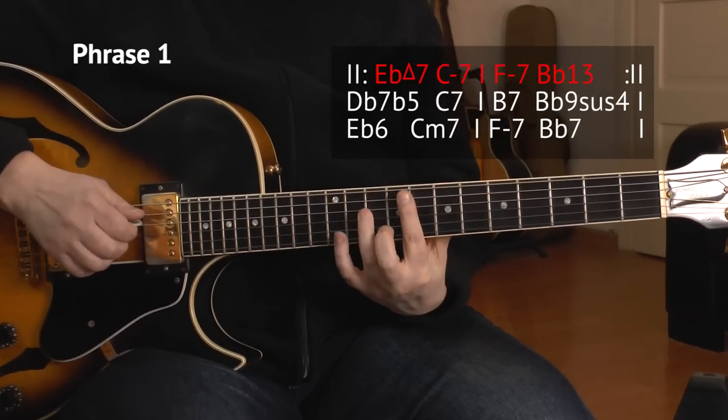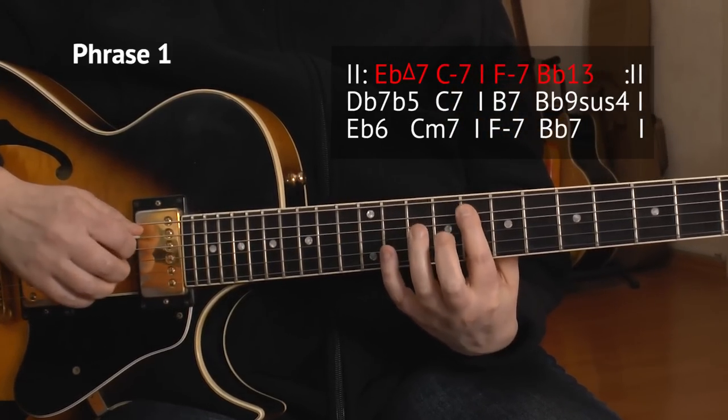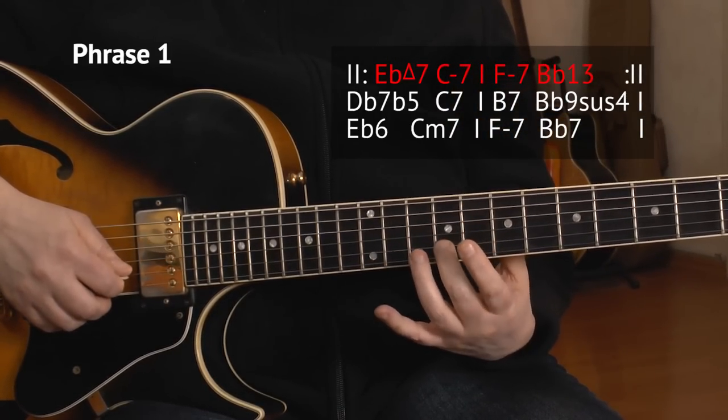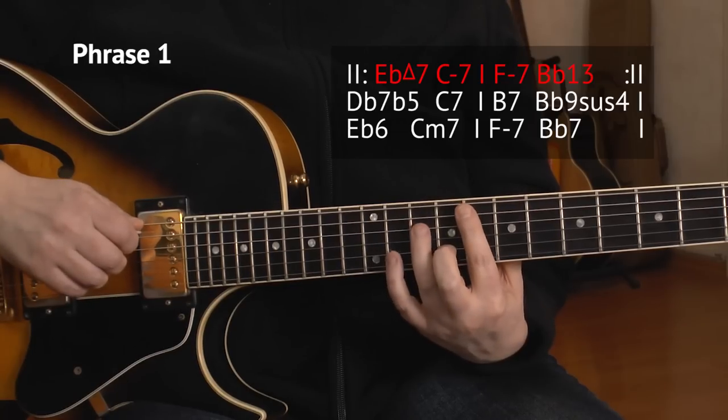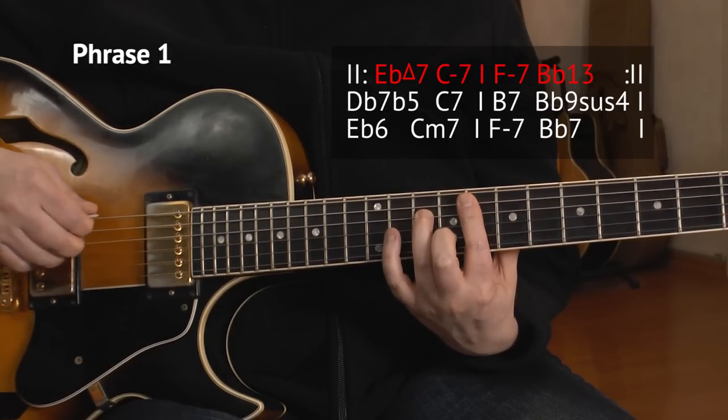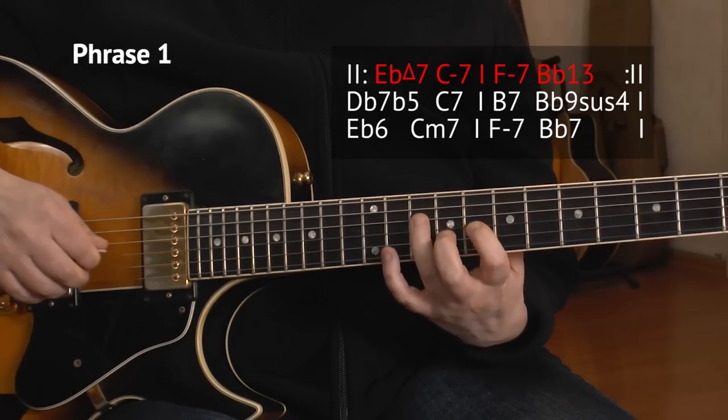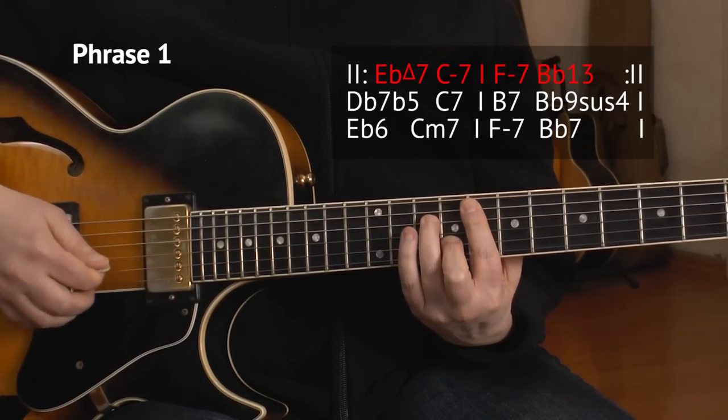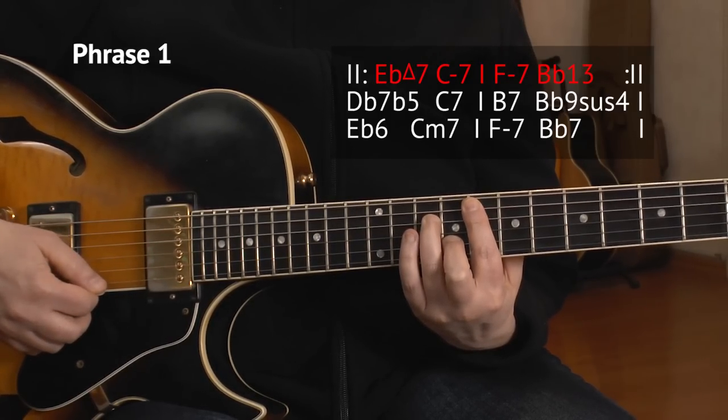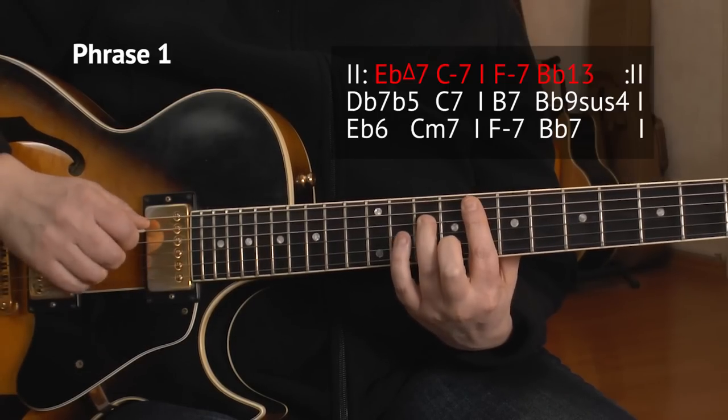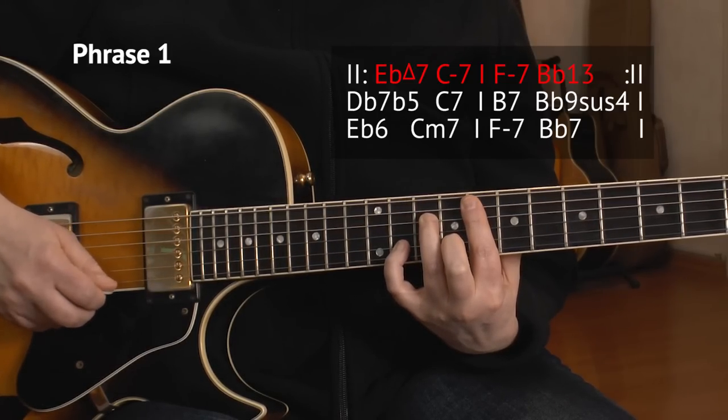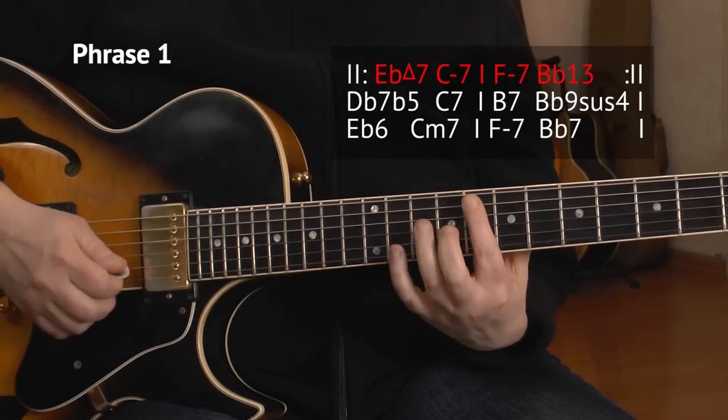Now we have an F minor 7 on the 8th fret. That's 8, 10, 8, 9. And we only play it till the G-string. So 8, 10, 8. Now I play the B-string on that 9th fret, the 11th of the B, and I bar over to the E-string 8.